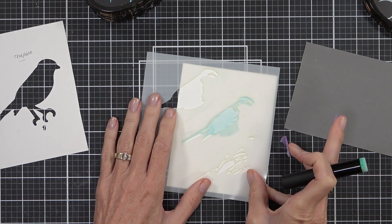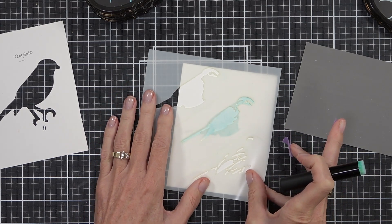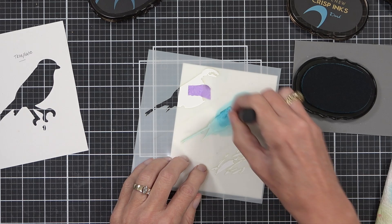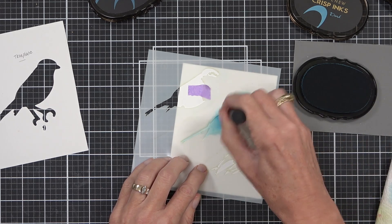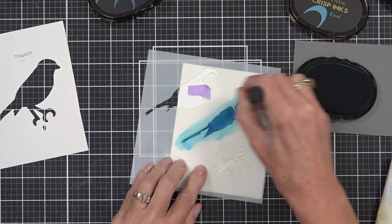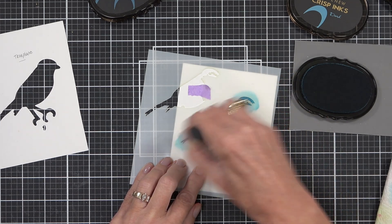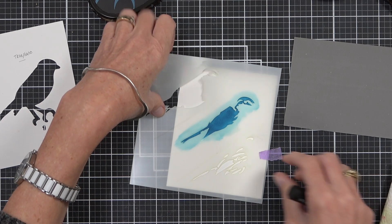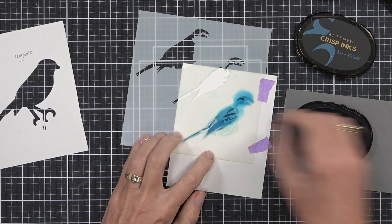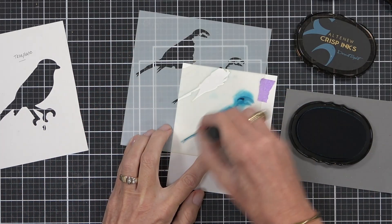So I'm using the mini ink blending tool here. I'm actually finding that I'm reaching for this one the most now, especially if I want some bold color. I find I can really add a lot of color and depth with these blending tools and they're really easy to clean just on a piece of paper towel.